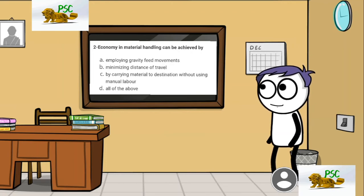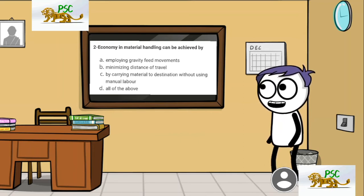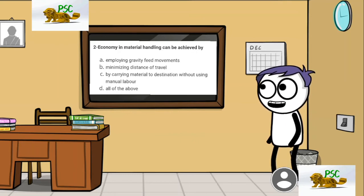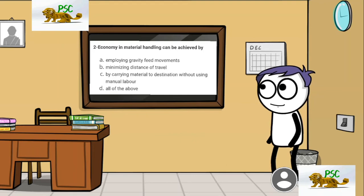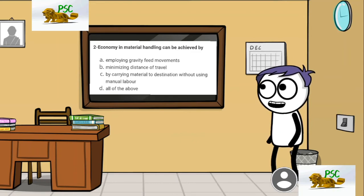The second question is: how is material handling made economical? Options include: production cost is 20–60%, production cost is less than 20–60%, and employing gravity feed movements.